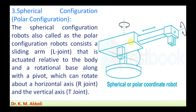The arm can rotate about the horizontal axis and also about the vertical axis, and it can move up and down. We get one rotational motion, one angular motion, and one linear motion. The rotation is similar to the formation of a sphere, therefore it is called the spherical configuration.